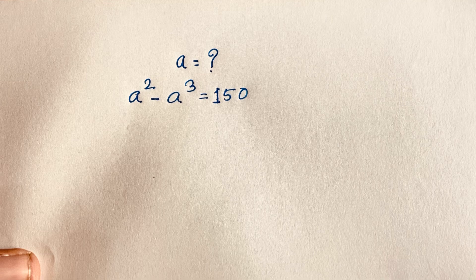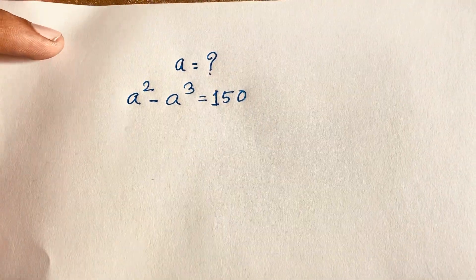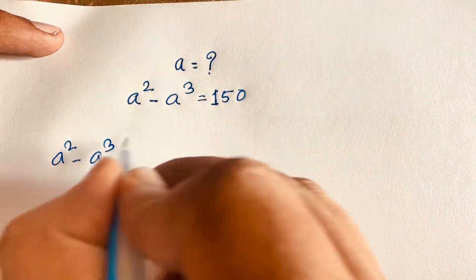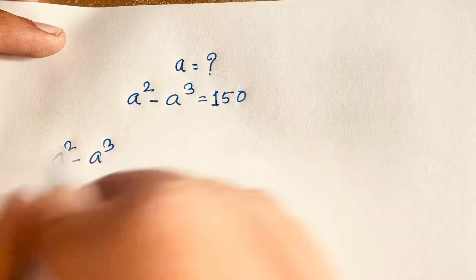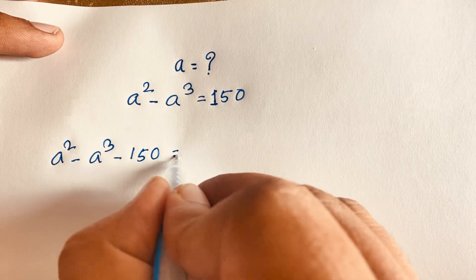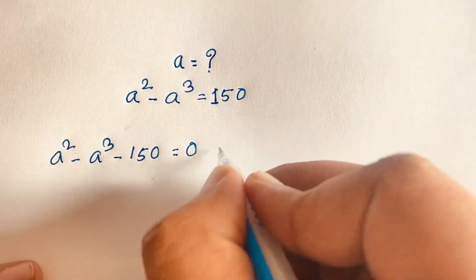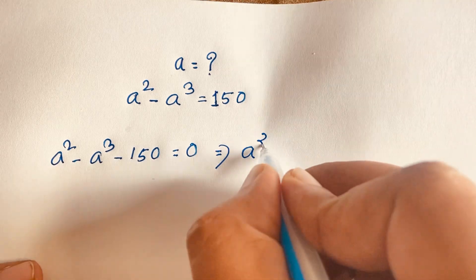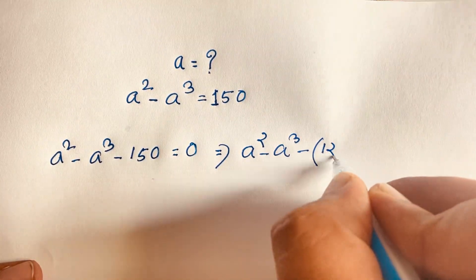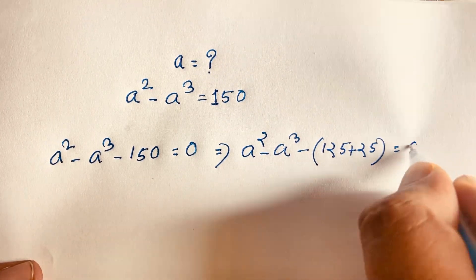But how to solve this question? First of all, I can see easily here is a squared minus a cubed. And if I move the 150 to this side, it will be a squared minus a cubed minus 150 is equal to 0. In this expression, we split 150 as 125 plus 25, so it will be a squared minus a cubed minus 125 minus 25 is equal to 0.